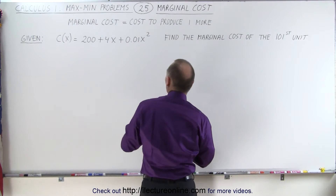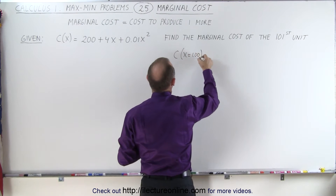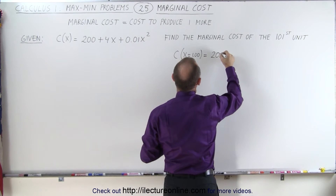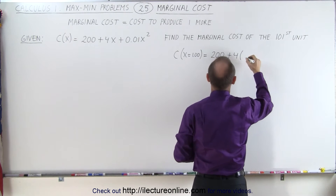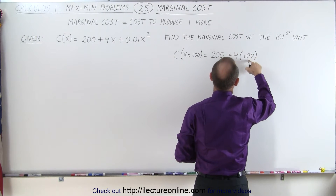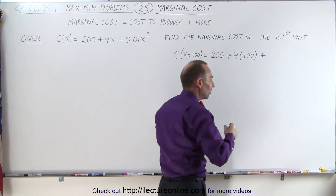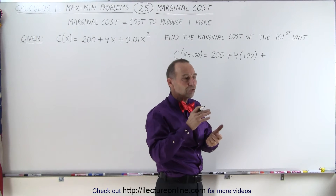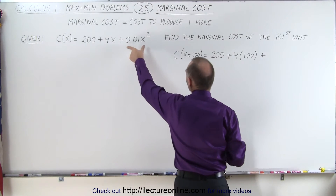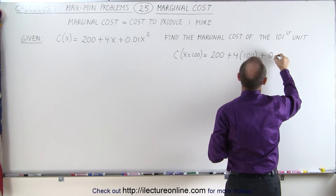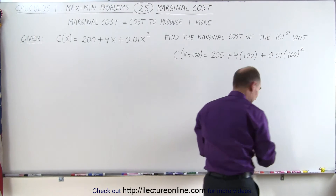Let's find the cost to produce 100 units. C when x equals 100 is equal to 200, which is the fixed cost, plus 4 times 100, which is the cost per unit. There's an additional term because as you're producing more and more units, the push against the maximum limit of capacity begins to add additional cost — that's what this term represents. So 0.01 times 100 squared.